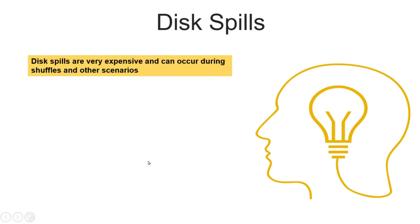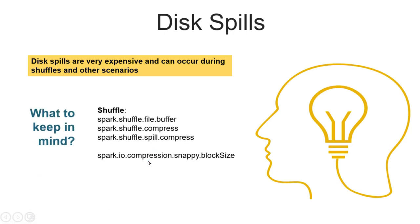Disk spills happen in shuffle scenarios or when cached data exceeds available memory. Disk spills are expensive because writing data to disk and reading it back takes significant time and effort. To mitigate this, we can set the size of the shuffle file buffer, use `spark.shuffle.compress`, and enable `spark.shuffle.spill.compress`. We can also configure the Snappy compression block size. Setting these properties properly helps reduce disk spill size and in turn improves performance.